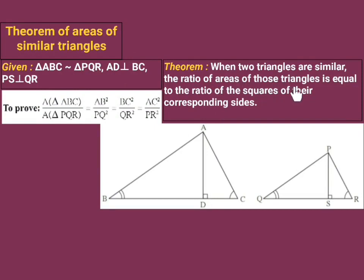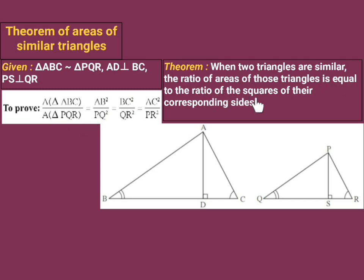The ratio of areas of those triangles is equal to the ratio of the squares of the corresponding sides — this is what we need to prove. The ratio of areas of triangle ABC and triangle PQR means: area of triangle ABC upon area of triangle PQR is equal to the ratio of squares of the corresponding sides.